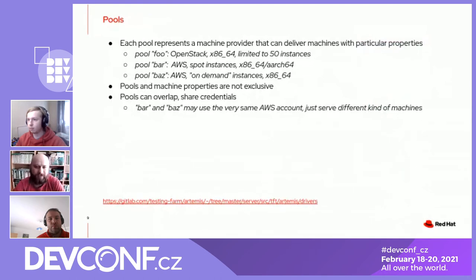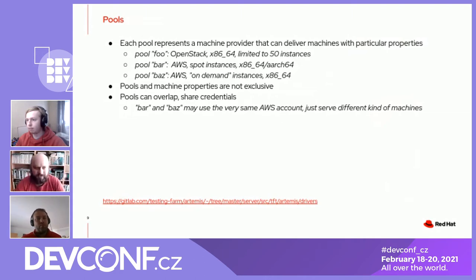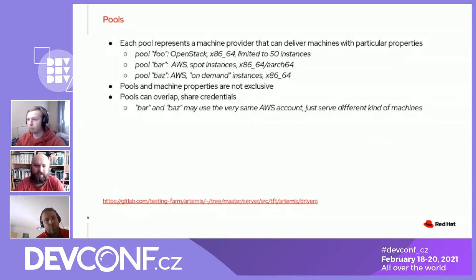The service works with what we call pools. They actually represent the actual provisioning services like OpenStack, AWS, Azure, Beaker, or whatever else we would like to connect to it. Each pool provides — whether different or the same doesn't matter — virtual machines or bare metal machines with particular configurations. It's usually possible to get more than one virtual machine kind from OpenStack or Amazon Cloud. We organize these machine flavors into several pools, and then we can basically switch transparently between those pools without involving the requester.